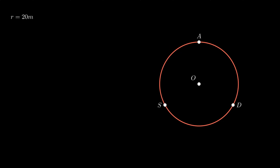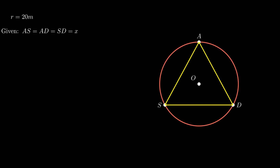Moving on to the next problem. There is a circular park with center O of radius 20 meters. Three boys named Ankur (point A), Syed (point S) and David (point D) are sitting at equal distance on the boundary. Each boy holds a toy telephone in their hands. We need to calculate the length of the string of each phone, that is the length of any one side of equilateral triangle ASD. As the boys are standing at equal distance from each other, segments AS, AD and SD are equal and assumed to be X.